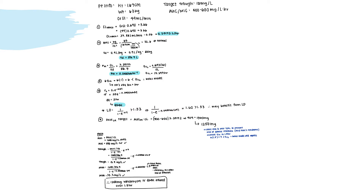We determine the dosing interval using the equation C2 = C1 × e^(−K × ΔT). Plugging in a target trough of C2 = 15 and target peak of C1 = 35, we solve for ΔT and find the dosing interval should be every 24 hours. To determine whether a loading dose is needed, we calculate 1 / (1 − e^(−K × tau)) with tau = 24 hours. This gives 1.62, which is greater than 1.3, indicating the patient may benefit from a loading dose.